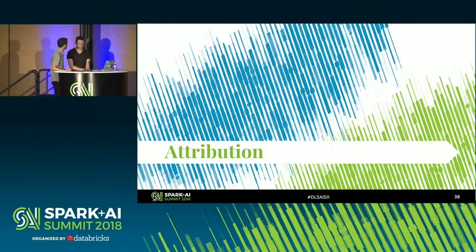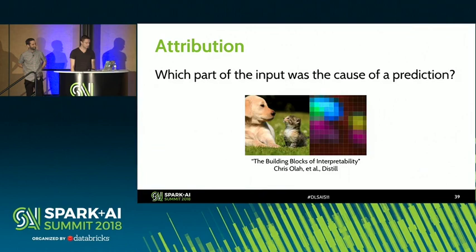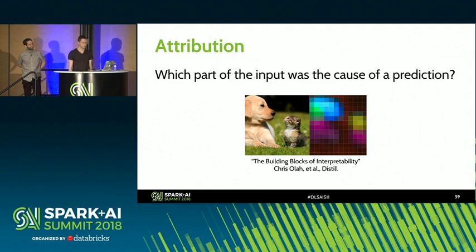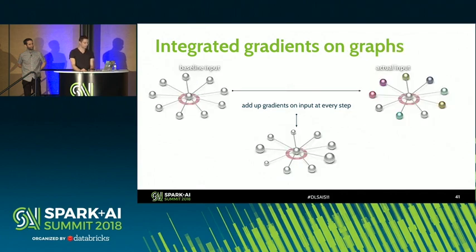How about attribution? That's the second method we use to gather model explanations. The image processing parallel: we have a picture labeled as a dog, and we want to find out why the neural network predicted that. The way we do this is using the integrated gradients method: you start from an empty baseline, get the actual input, gradually move toward the input through many steps, and add up the gradients on every step. For graphs, you take an empty graph and move toward the actual inputs, adding up the gradients at every step.